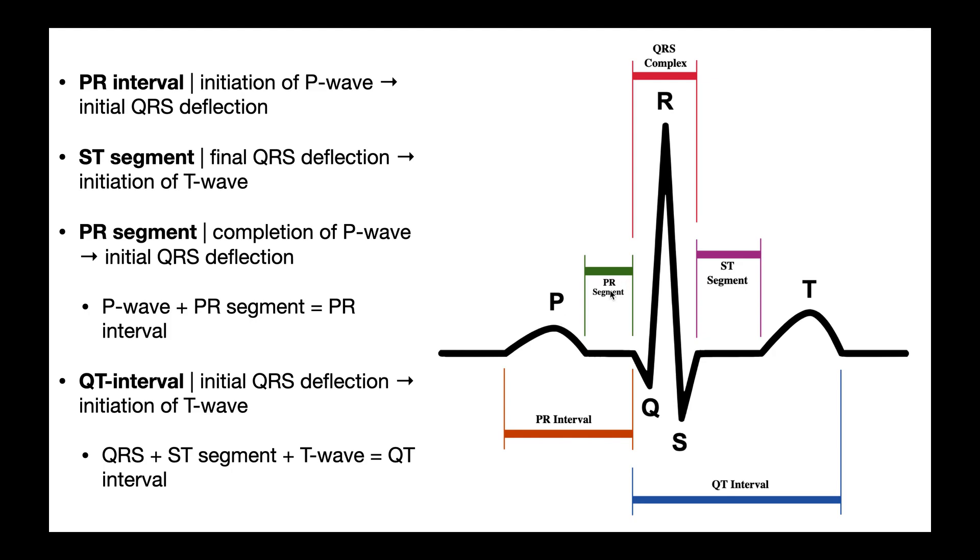Then we have the PR segment. The PR segment is smaller than the PR interval. And actually the PR segment and ST segments are both smaller. And you can remember that because S is for smaller. Segment, smaller. The PR interval is from the completion of the P wave, so where the P wave ends all the way to that initial QRS deflection. So the PR segment and PR interval actually both end at the same place, right where this starts deflecting downward to Q. That's where the PR segment ends, and it starts at the end of that P wave. So that's your PR segment. What you should also notice is that if we take the time of the PR segment and add on the total time of the P wave, then that equals the PR interval.